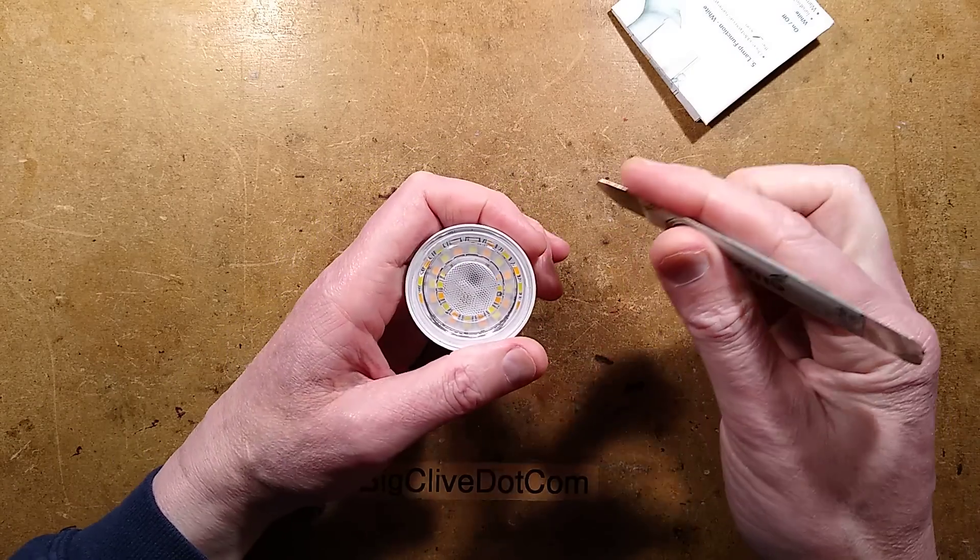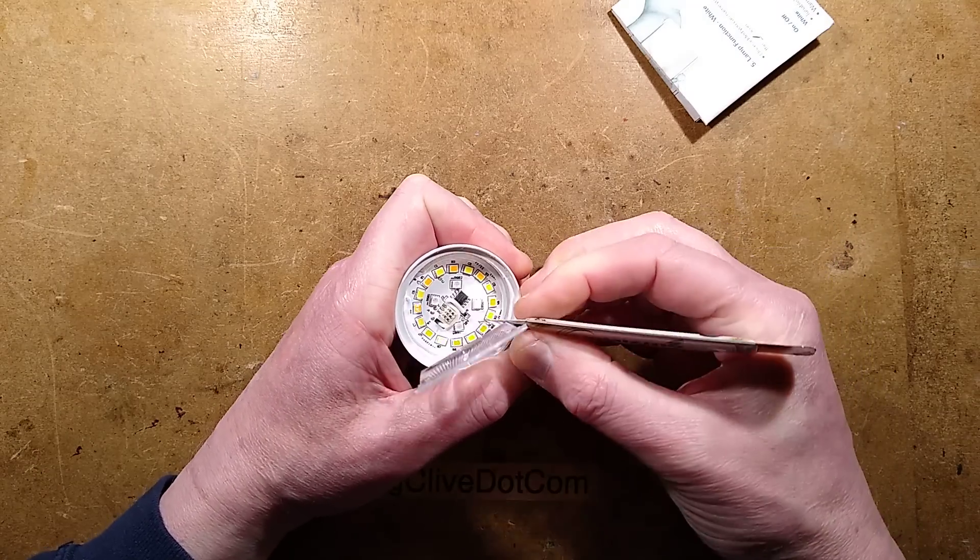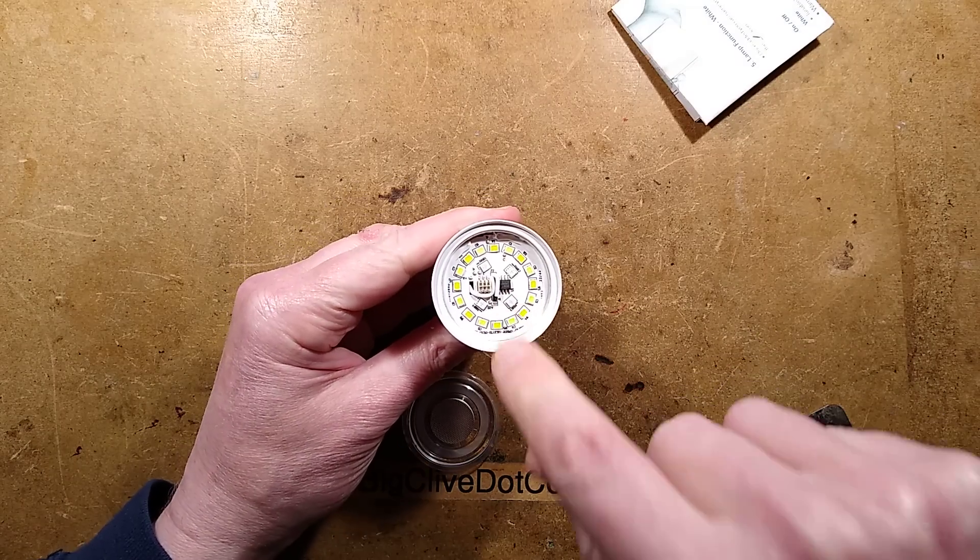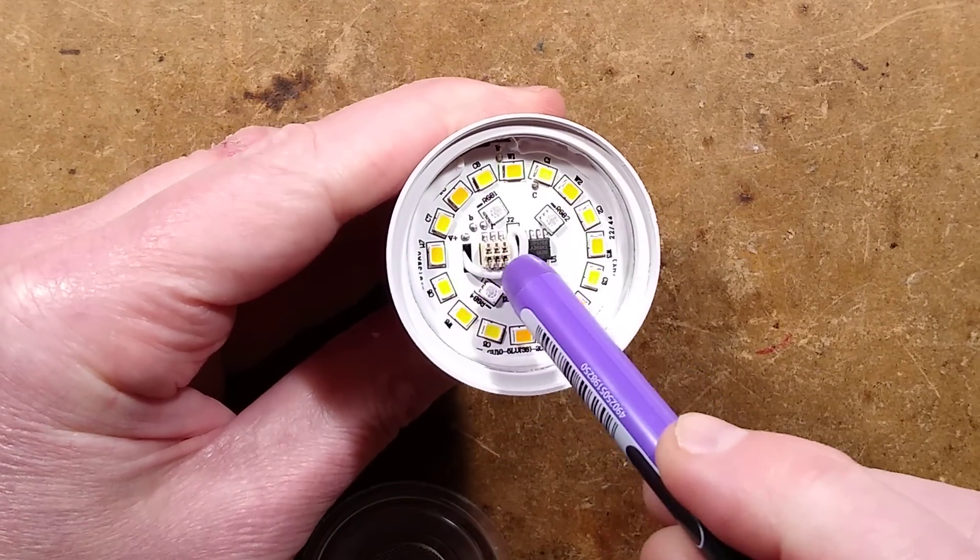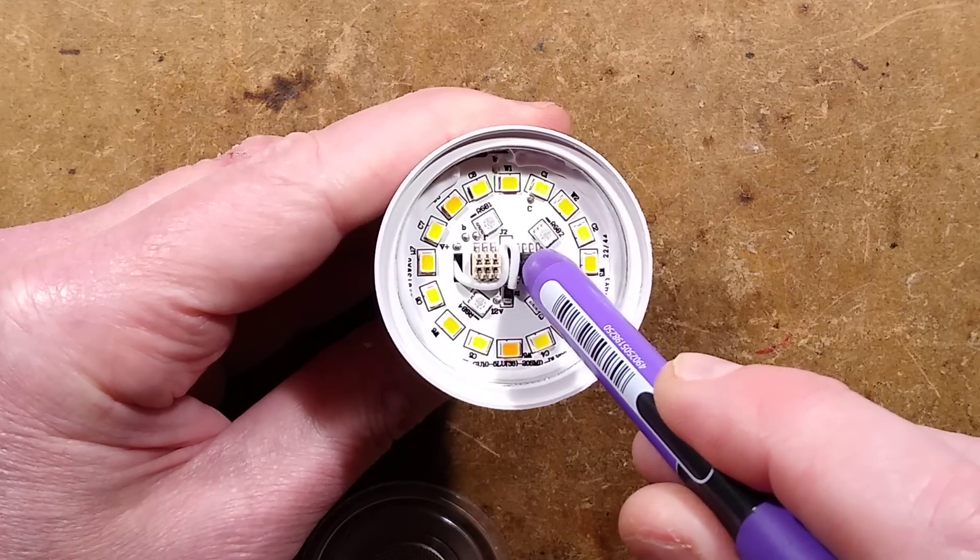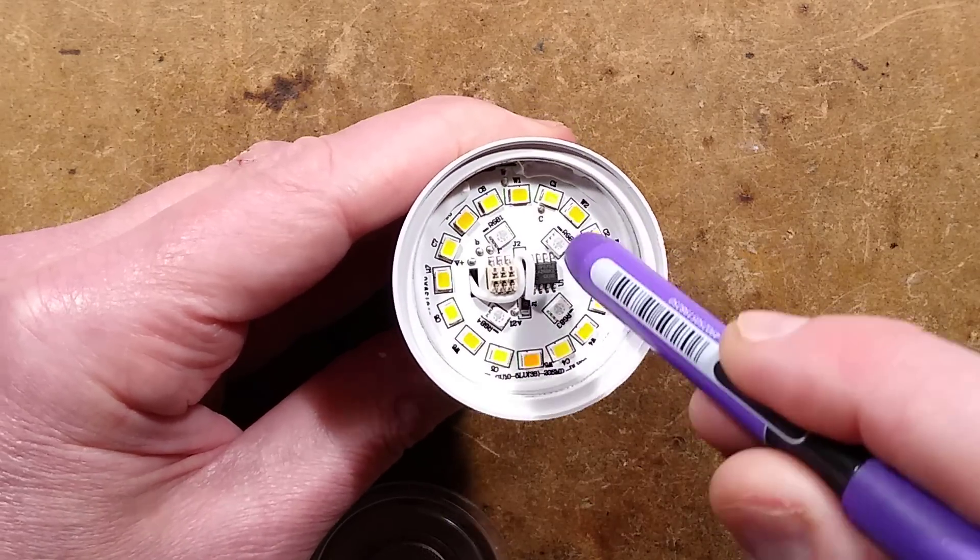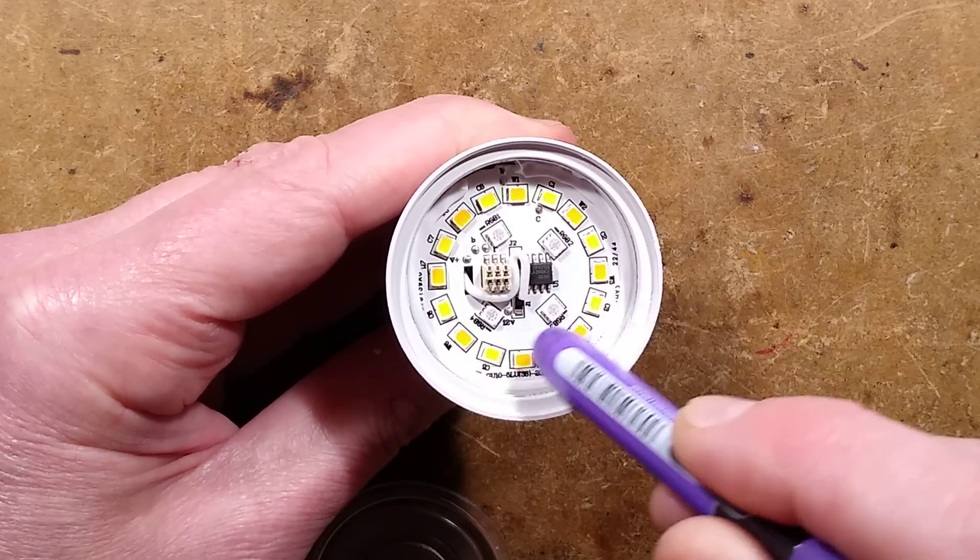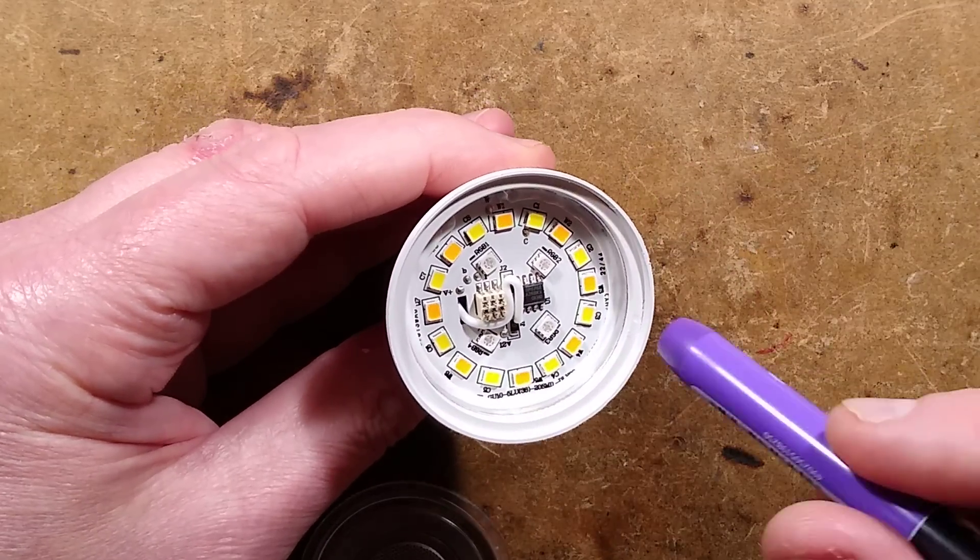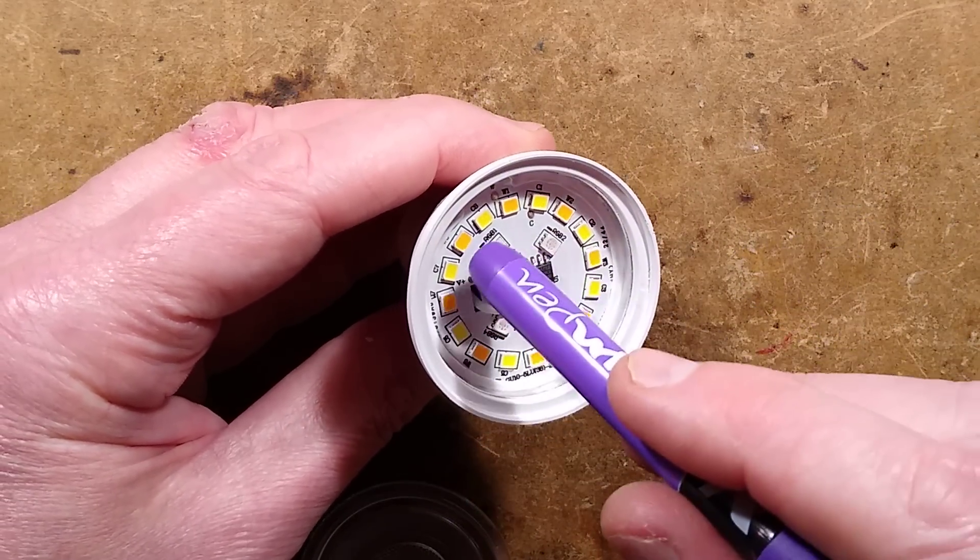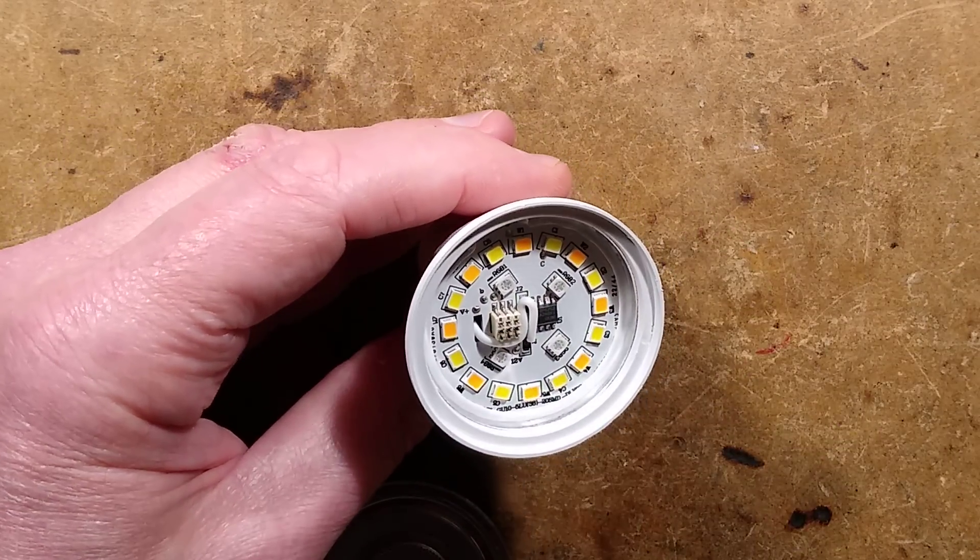If we pop the front off, it reveals what they claim is 16 million colors plus cold white and warm white. There's the little antenna snaked in there for the Wi-Fi and a very interesting chip. We've got eight warm white and eight cold white LEDs, then four RGB LEDs. So they provide the box-ticking RGB, but the main thing for super amounts of light is cold white, warm white, or both. The RGB is just token gesture, atmospheric lighting.